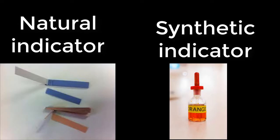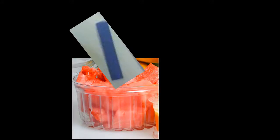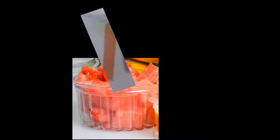Natural indicator is litmus, and synthetic indicators are phenolphthalein and methyl orange. These indicators tell us which substance is an acid and which substance is a base. If you take a substance that is acidic and keep blue litmus paper on it, it changes from blue to red. If we keep blue litmus paper on an acidic substance, it changes to red.